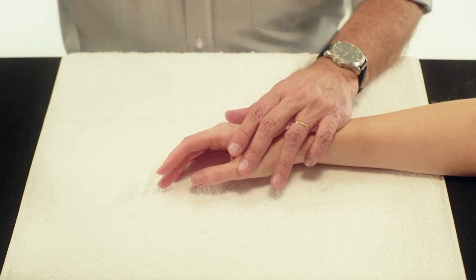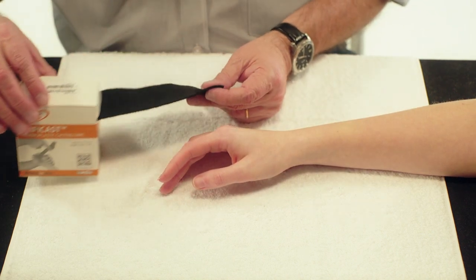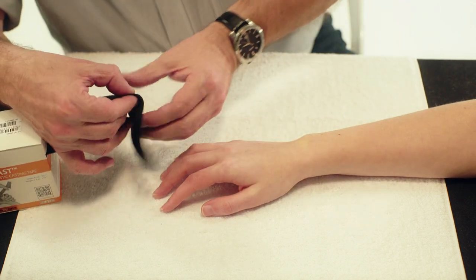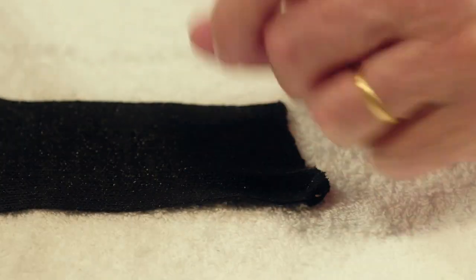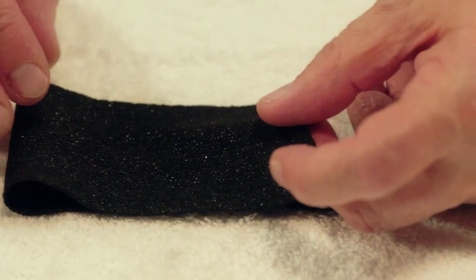Use a strip of six centimeters wide orthicast and twice the length of the finger. Fold the piece of orthicast in half.